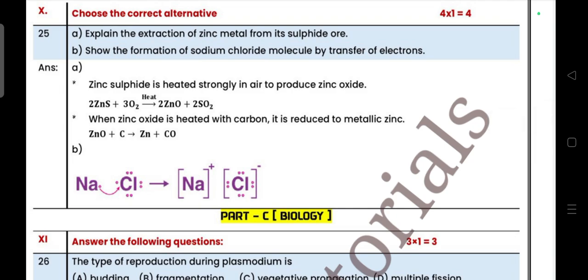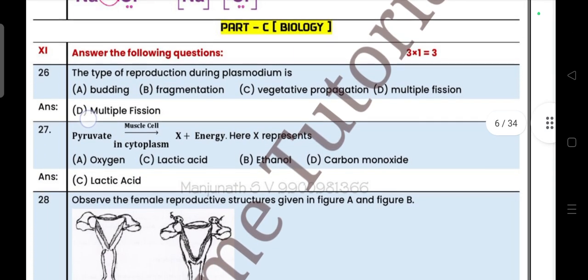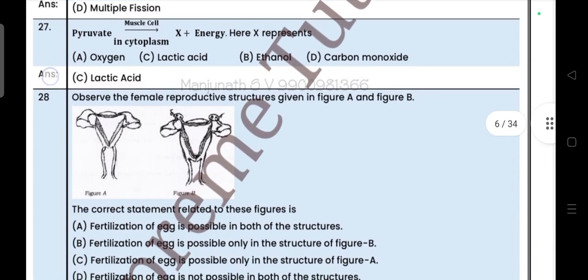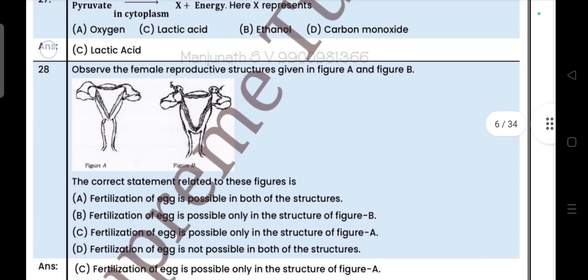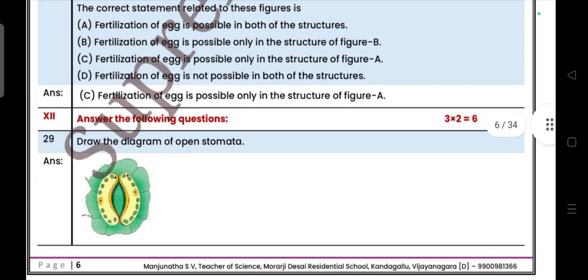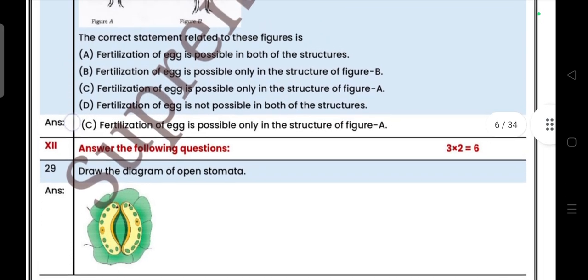Explain the extraction of zinc metal from its sulphide ore. Show the formation of sodium chloride molecule by transfer of electrons. Next, Part C Biology part, three multiple choice questions. The type of reproduction during the plasmodium is multiple fission. Question number 27: pyruvate plus energy, here X represents, X is lactic acid. Observe the female reproductive structure given in the figure A and B. The correct statement related to this figure is answer is C.